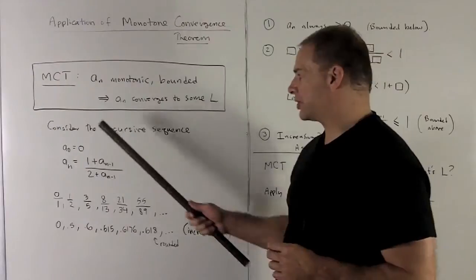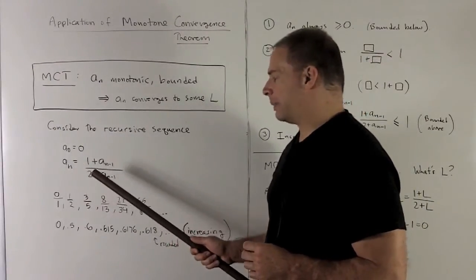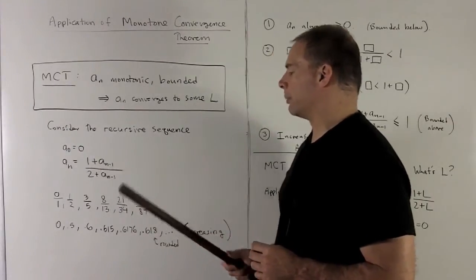For example, consider the recursive sequence where a_0 equals 0, then a_n equals 1 plus a_(n-1) over 2 plus a_(n-1).